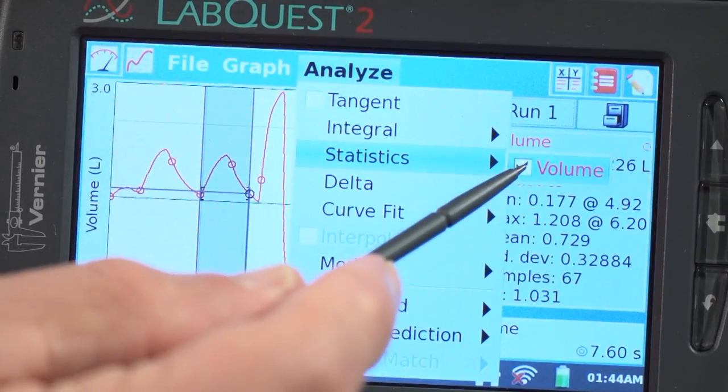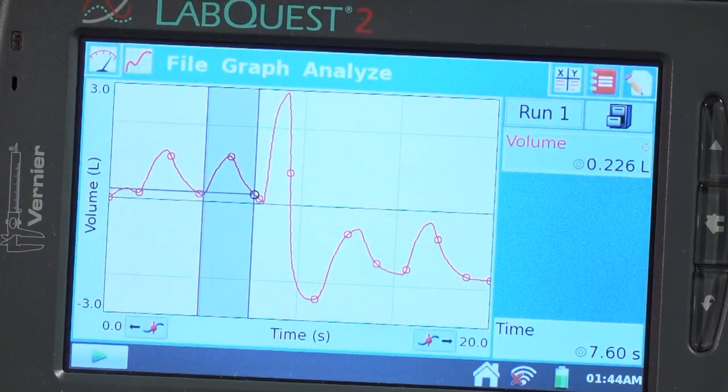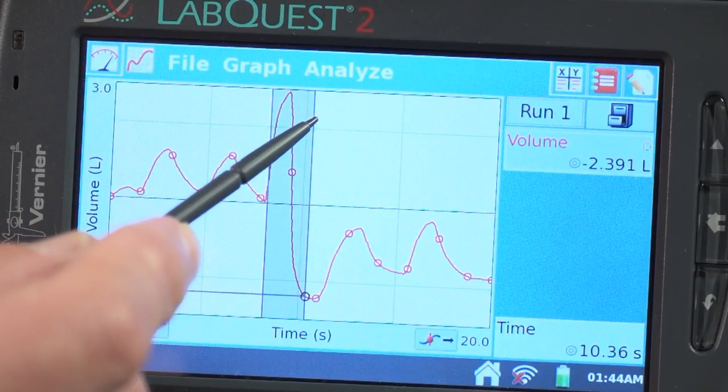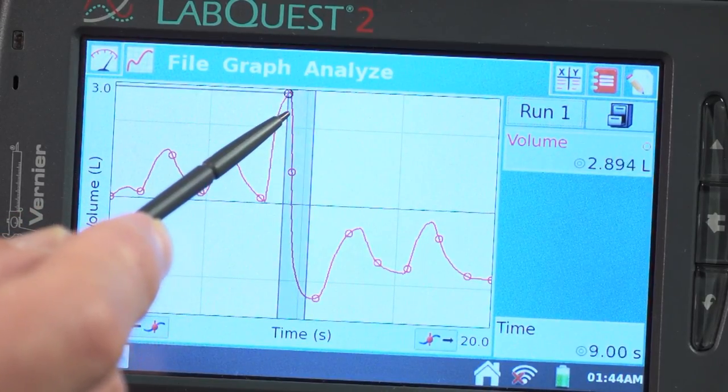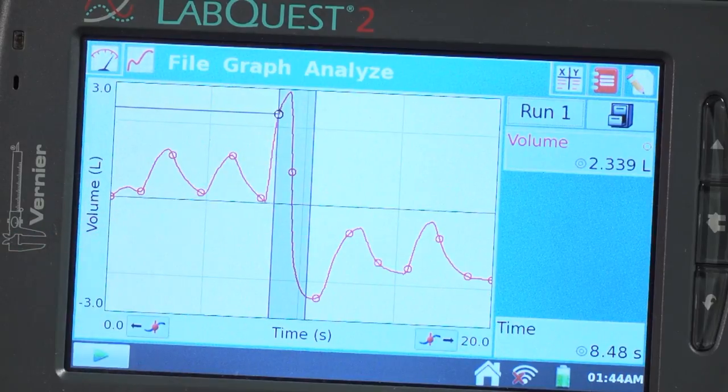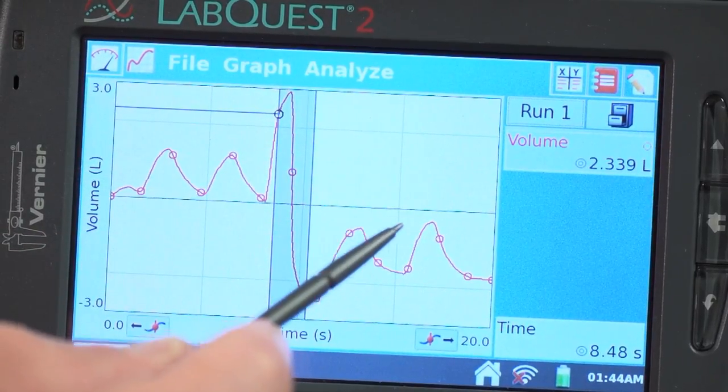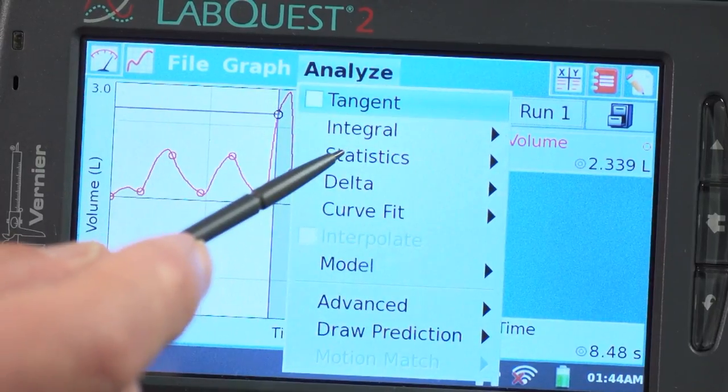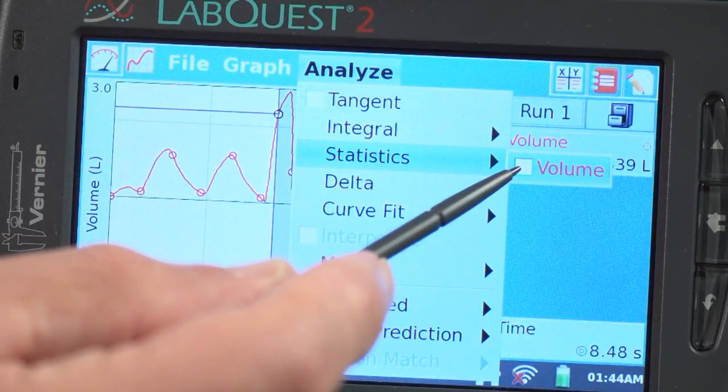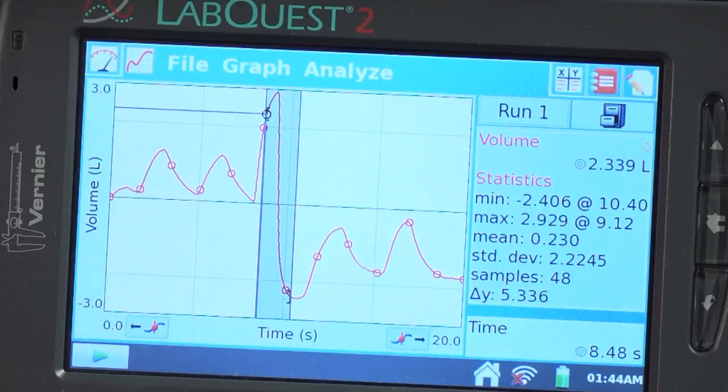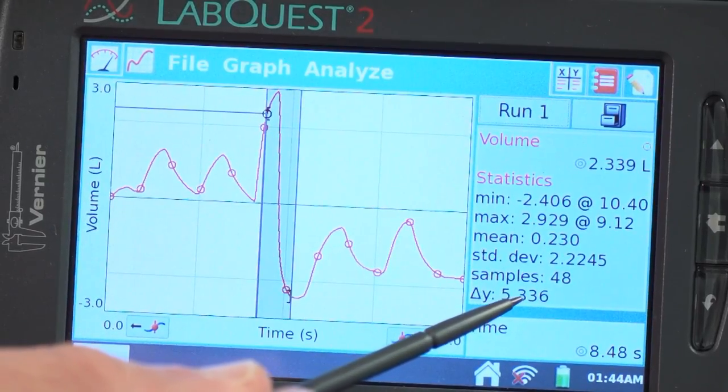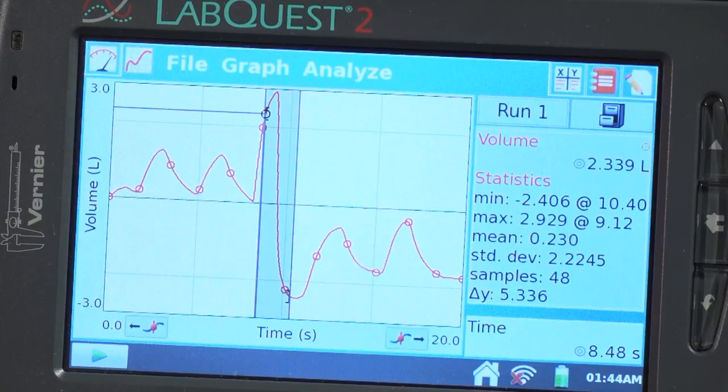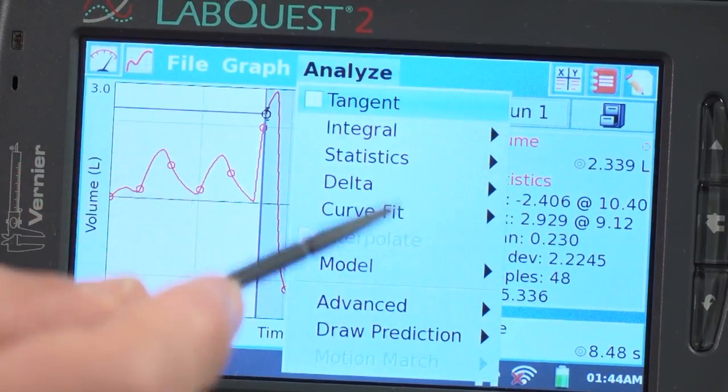So let's turn that off again. And just look at my maximal inhalation and then exhalation. So we can go from this whole region about here to here. Let's go to Analyze again, Statistics, Volume. And the delta Y is 5.336 liters. I'll just turn that off again.